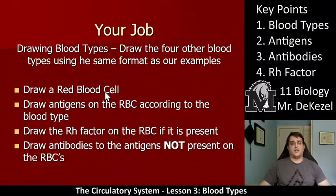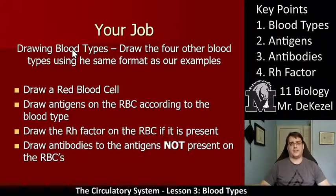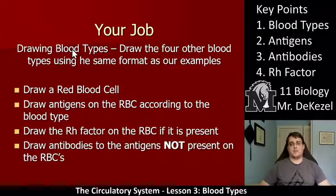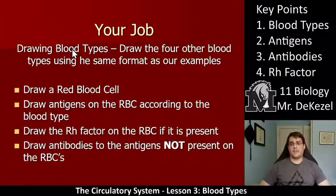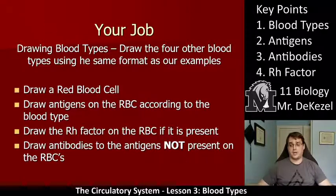So what I'd like you to do now is draw the other four blood types — we talked about four of them already, so draw the other four using the same format as our example. Step A: draw the red blood cell. Step B: draw the antigens on the red blood cell according to the blood type. Step C: draw the RH factor on the red blood cell if it is present. Then draw the antibodies to the antigens that are not present on the red blood cell. If you have questions, let me know. It's very important to be able to identify blood types and know what antigens and antibodies mean. Thanks so much for watching, and I will see you soon.